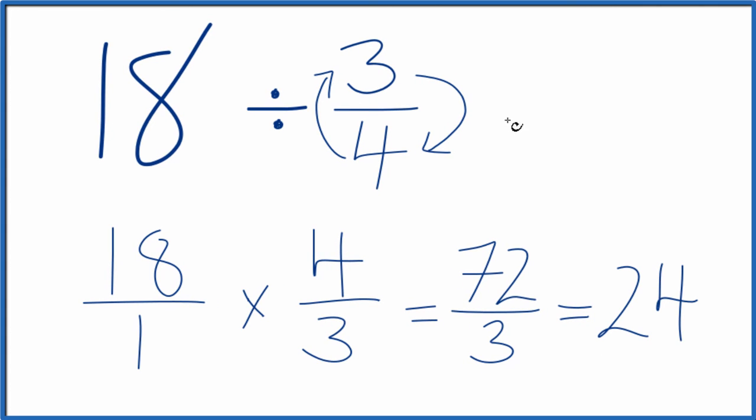So 18 divided by 3 fourths, that equals 24. If you were to take 24 and multiply it by 3 fourths, you get 18. So we did this correctly.